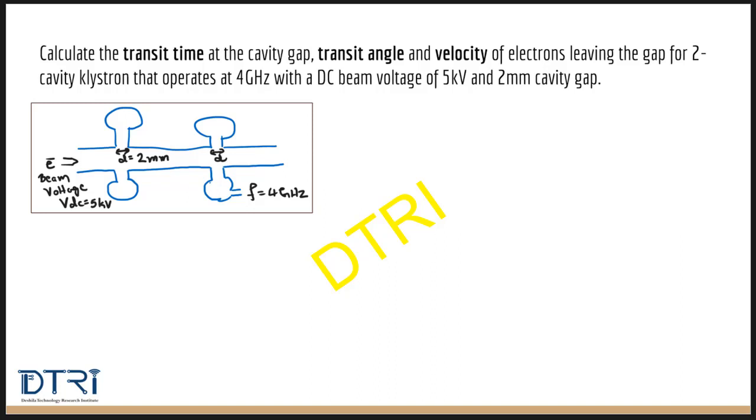Given the data, we have to find the three parameters. Let us understand the three parameters first. What is the meaning of transit time? It means how much time the electrons take to pass through the cavity.